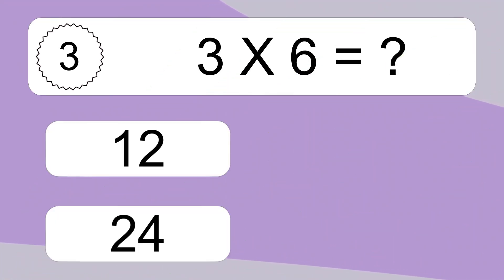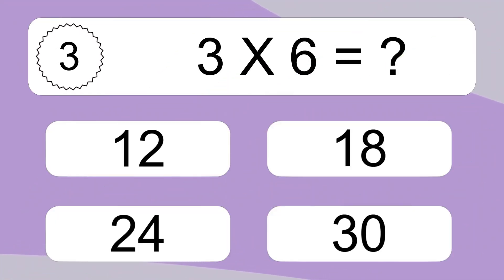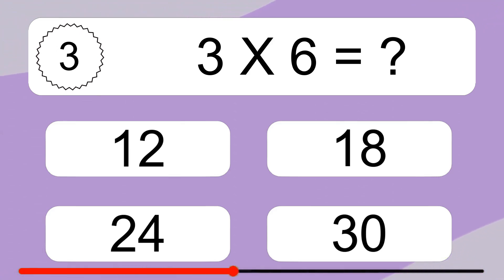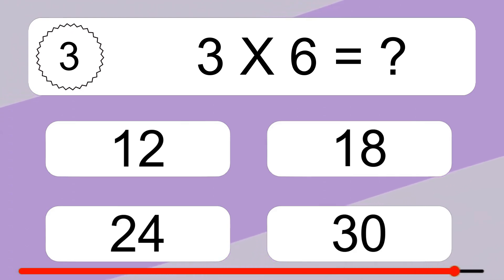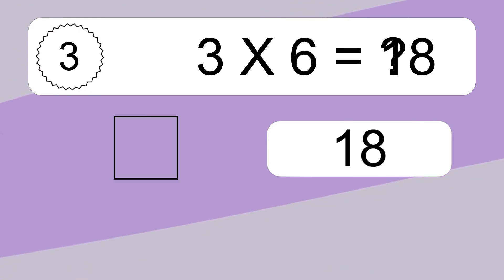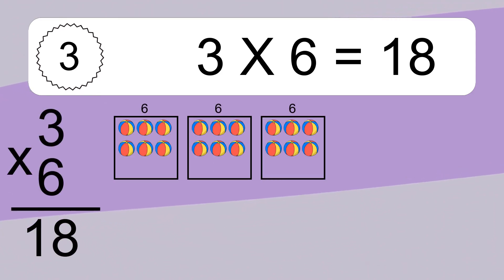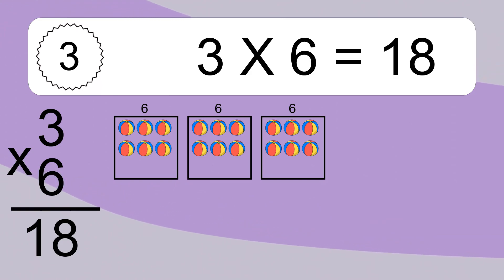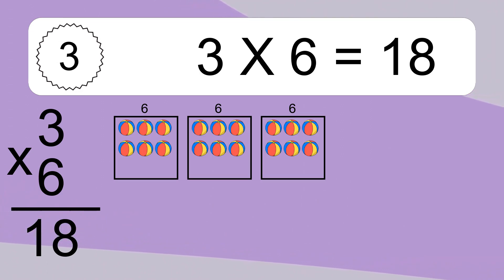3 times 6 equals what? 3 times 6 equals 18. We have 3 boxes, and each box has 6 colorful balls inside. If you count all the balls in all the boxes together, you will have 3 times 6 balls. This equals 18 balls.